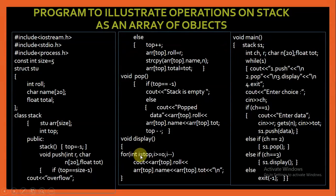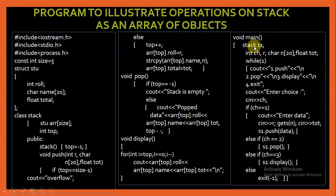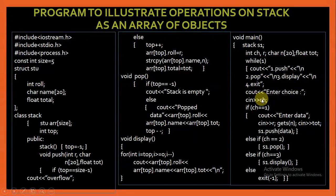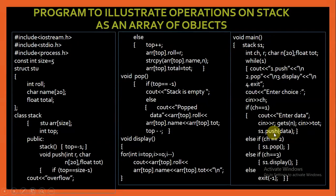In the display function, I go from top till 0 and display all elements. In void main, I declare an object s1 of class stack and the necessary variables. A while(1) loop displays all the choices. I enter the choice. If it is 1, I enter the data for all structure members: role number, name, and total, and call the push function. If the choice is 2, I call the pop function. If 3, I call the display function. Otherwise, I exit from the program.